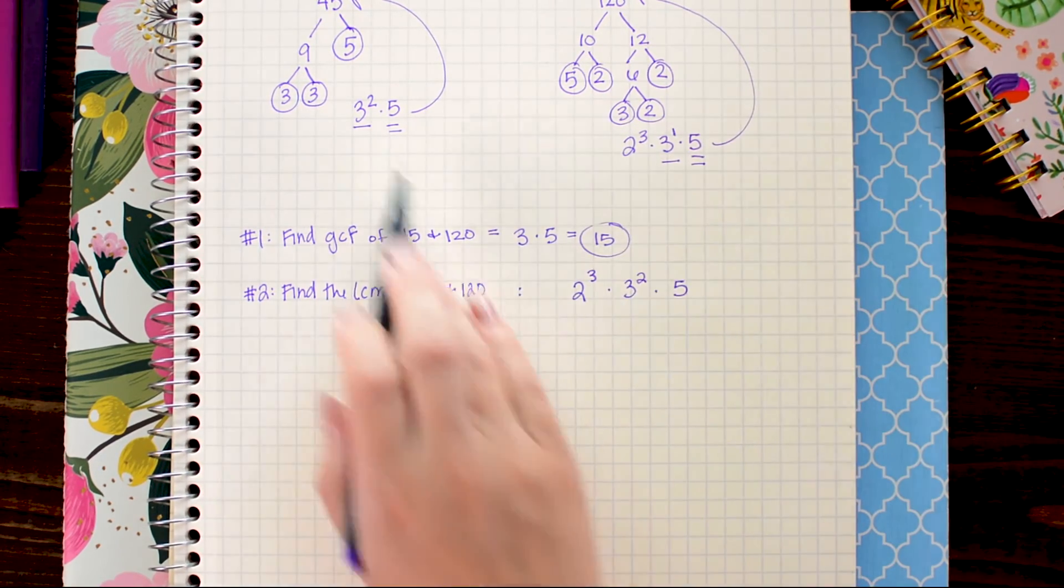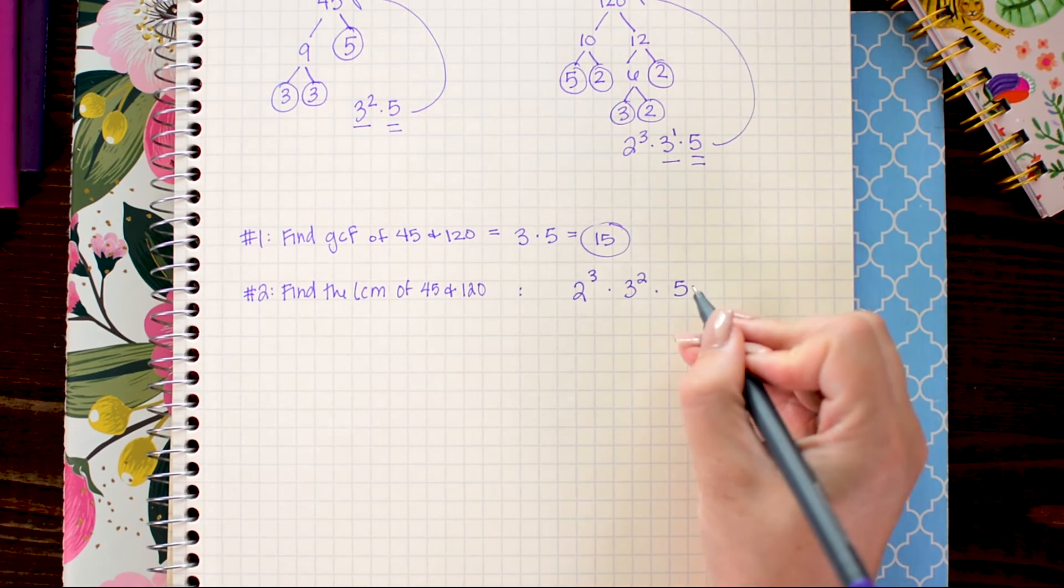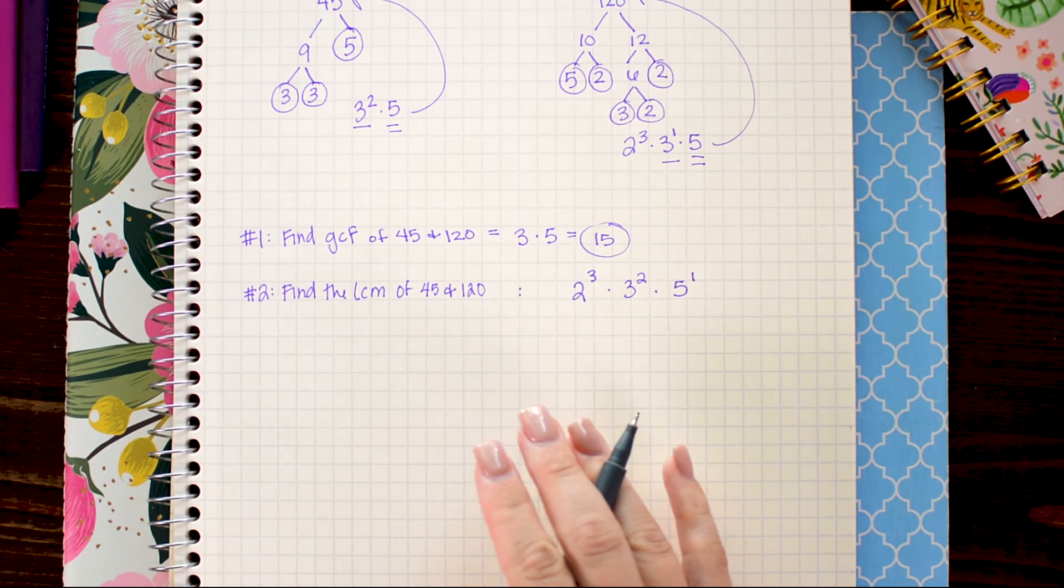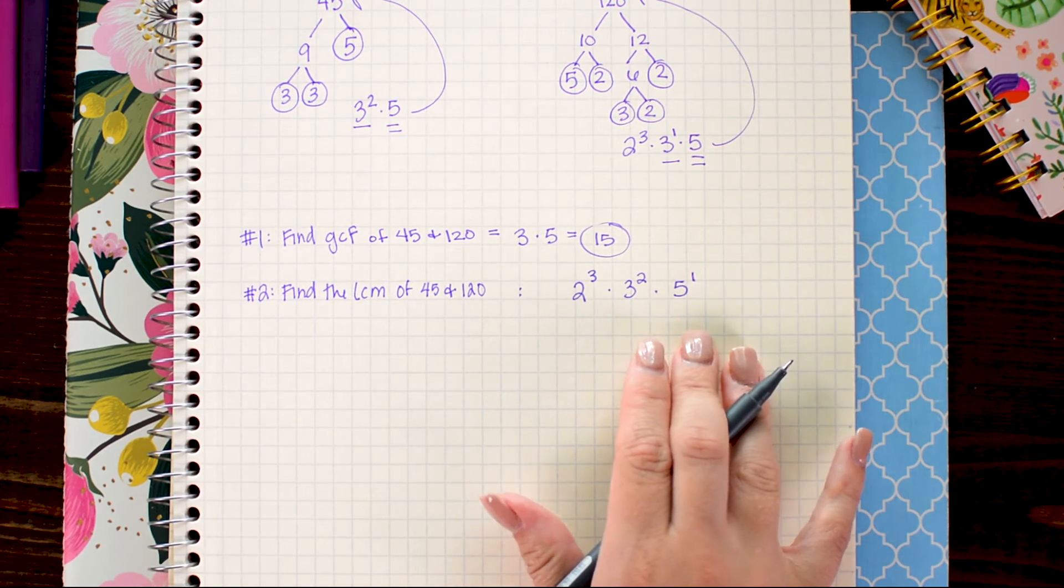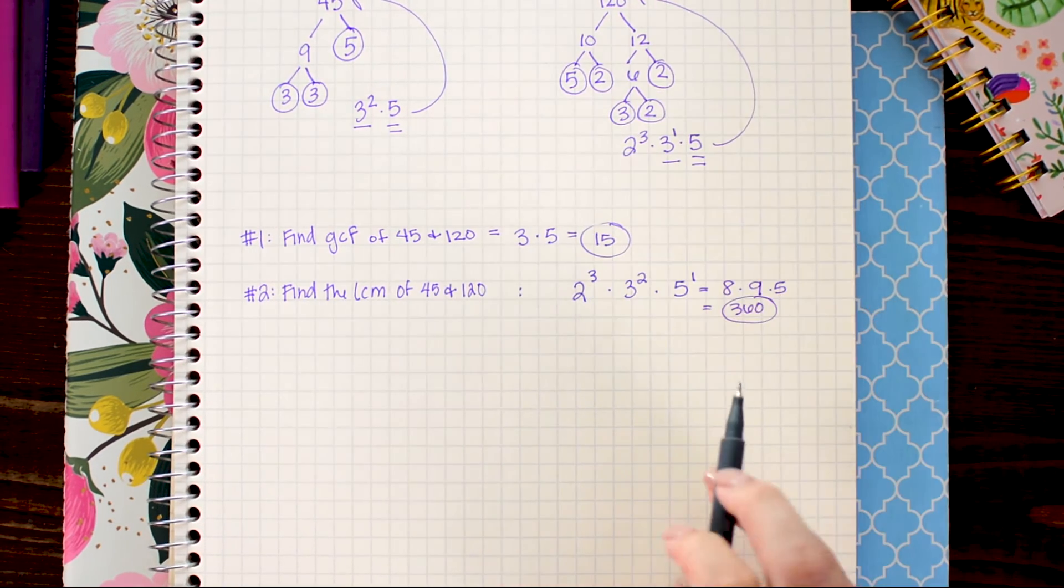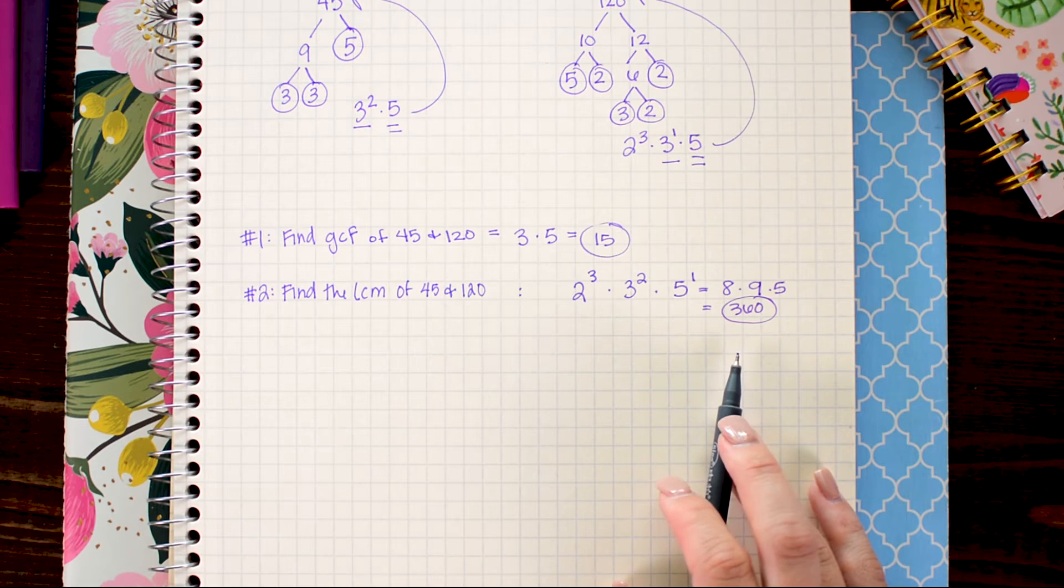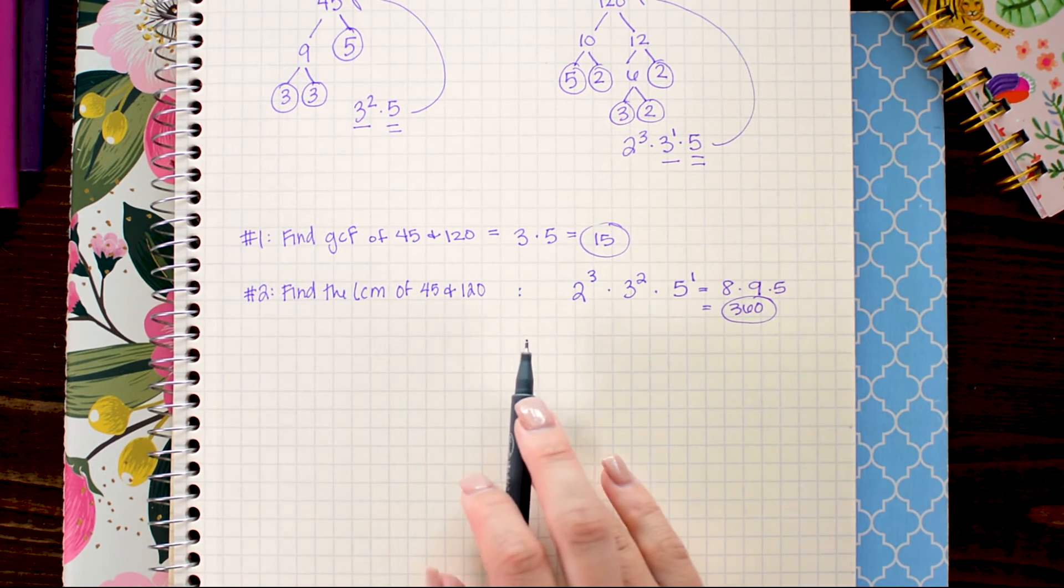And for the 5 it looks like we just have 5 on both of it so the largest power is 1. Now all that's left to do is multiply these values all together. There you go 360 is our least common multiple of 45 and 120.